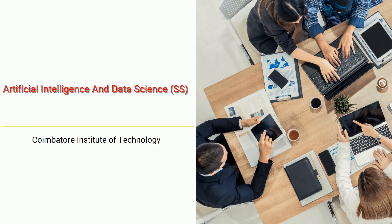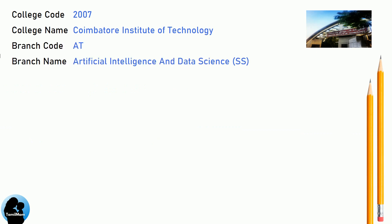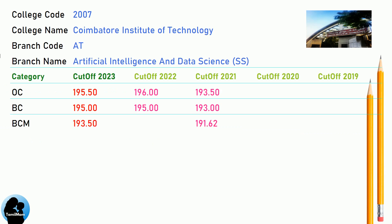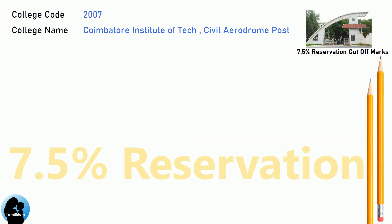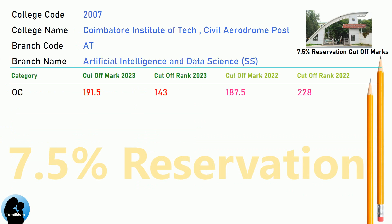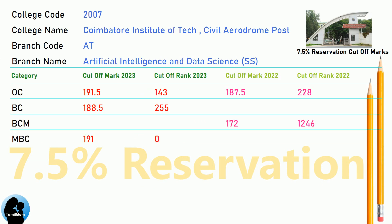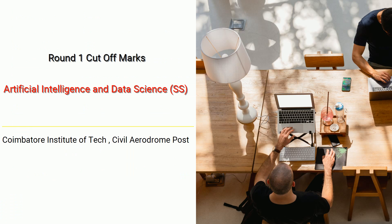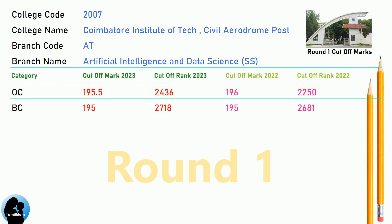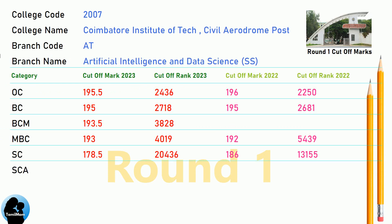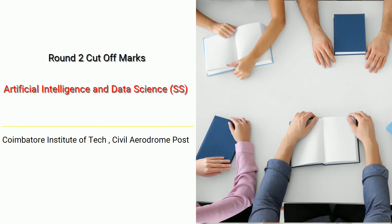DNA Cut-Off for Coimbatore Institute of Technology in Artificial Intelligence and Data Science. DNA 7.5 Reservation Cut-Off for Coimbatore Institute of Technology in Artificial Intelligence and Data Science. DNA Round 1 Cut-Off and Round 2 Cut-Off for Coimbatore Institute of Technology in Artificial Intelligence and Data Science.